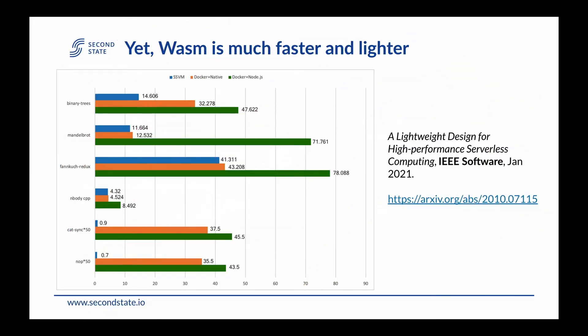WebAssembly is much faster and lighter than Docker. This is from a paper we published earlier this year in IEEE Software — a peer-reviewed computer journal. We compared our WebAssembly runtime, called WasmEdge, against Docker. The orange bar is Docker plus a native C/C++ application. The green bar is Docker on Node.js. The blue bar is WebAssembly running in WasmEdge. At startup time, it's a hundred times faster than Docker, and at runtime it's also faster.